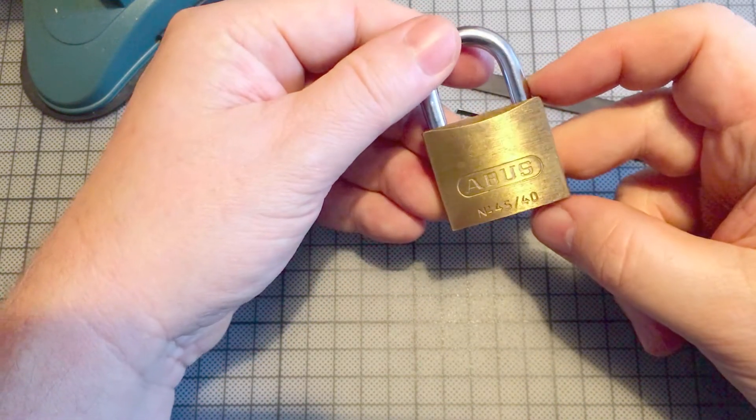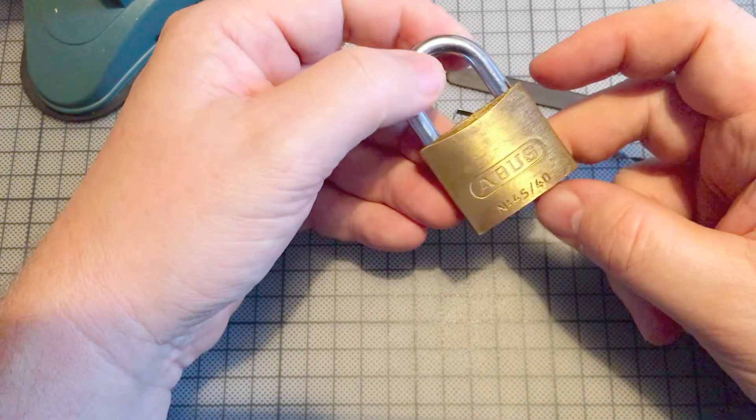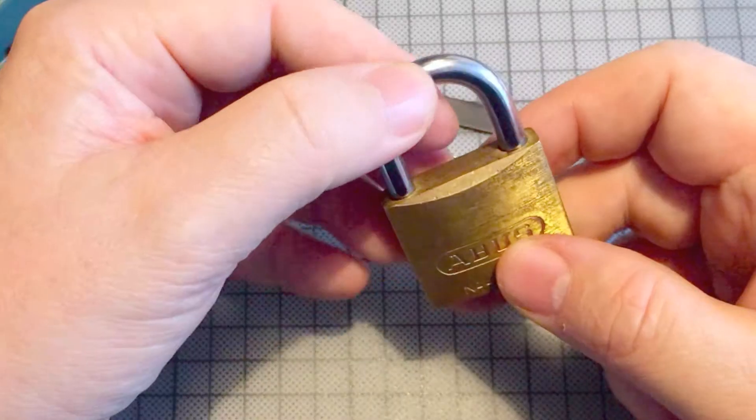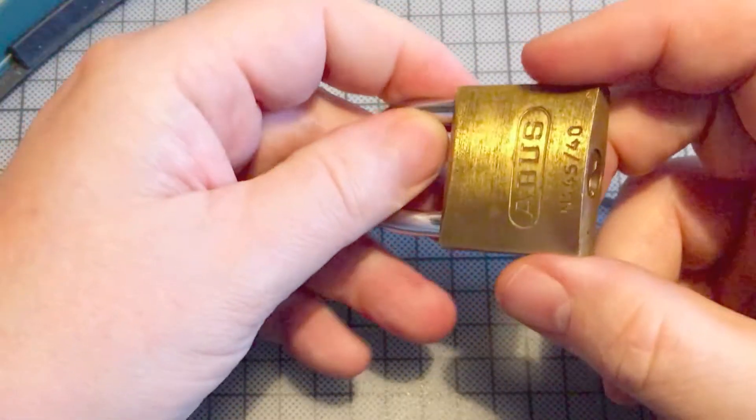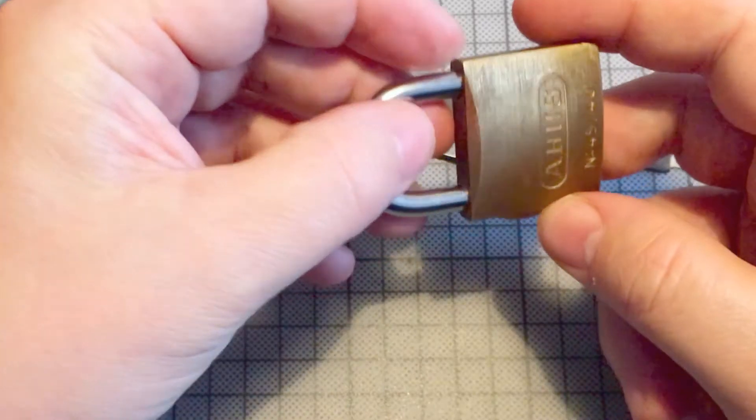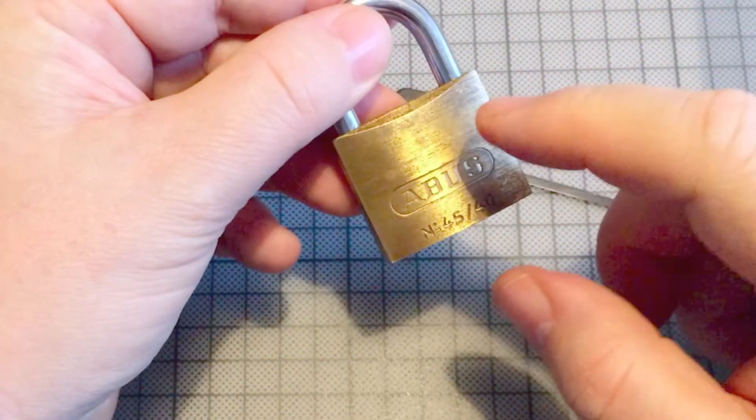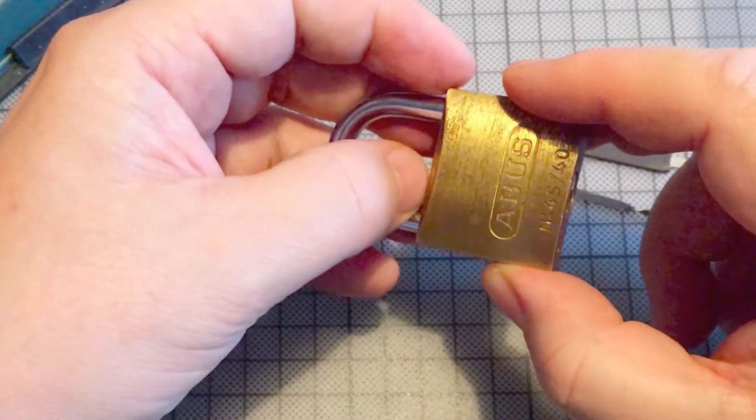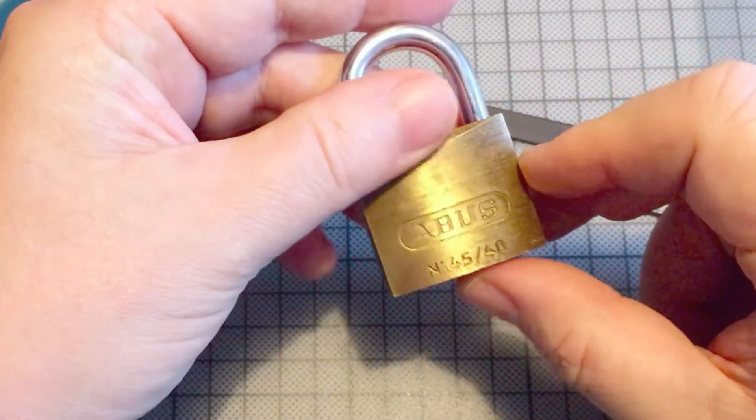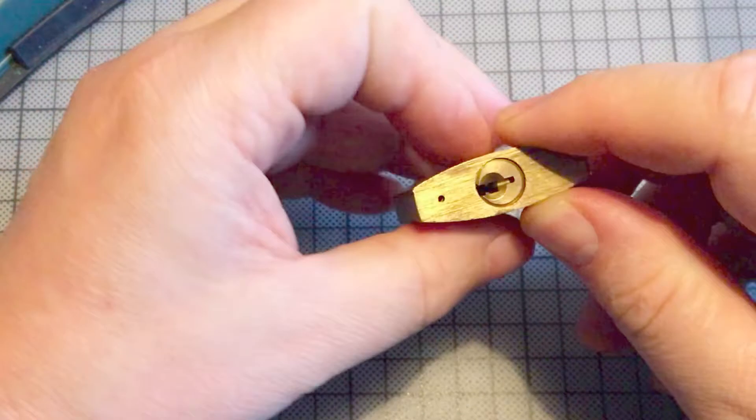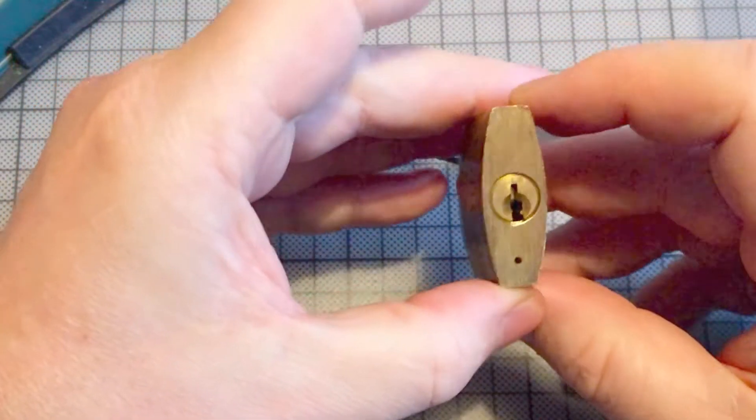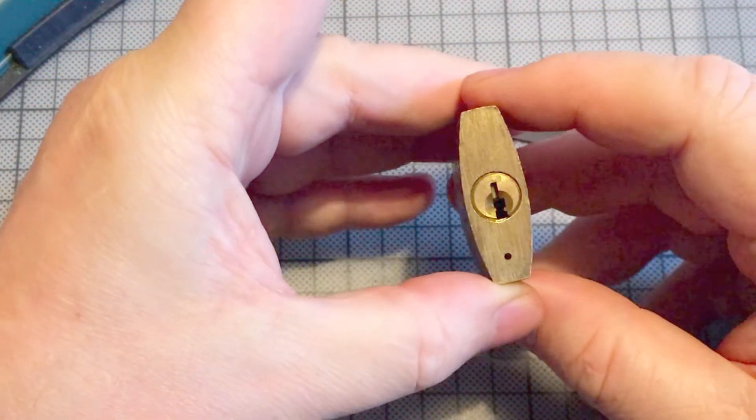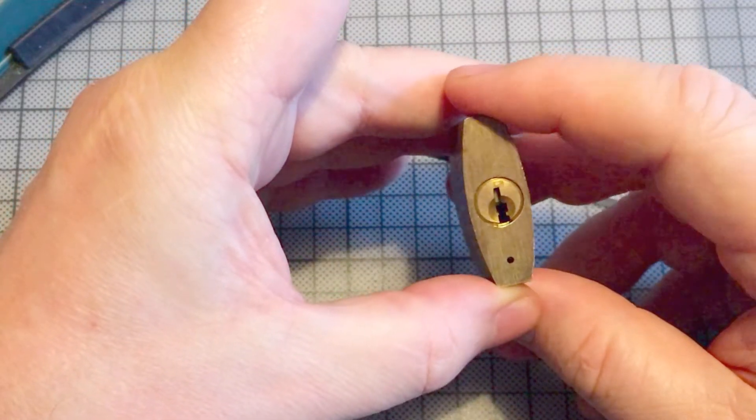So this time I've got an Abus 4540 here. I got it from my nephew because he had some problems with his self-made picks. In the beginning when he told me it's a 4540 I said oh, it's very concentric keyway, but this one is an old one and so it's absolutely easy and very good for a beginner.